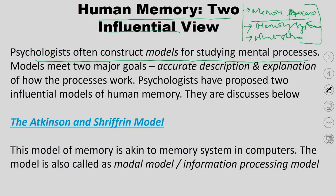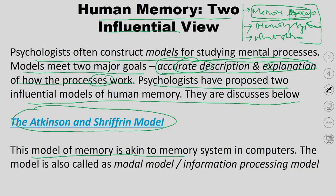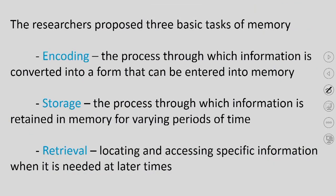Psychologists construct models for studying mental processes. Models serve two major goals: an accurate description and an explanation of how processes really work. Two influential models of human memory have been proposed: the Atkinson-Shiffrin model and the network model. Researchers propose three basic tasks of memory: encoding — converting information into a form that can be entered into memory; storage — retaining information for varying periods of time; and retrieval — locating and accessing specific information when needed.